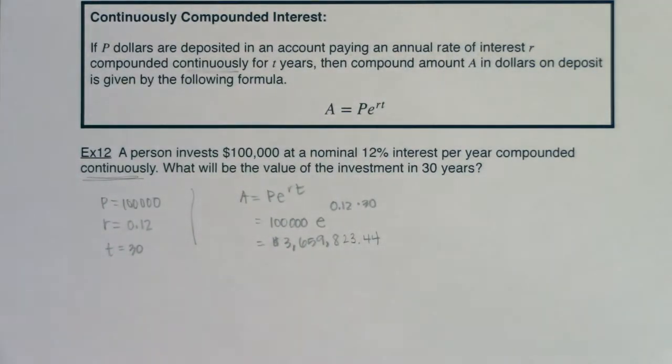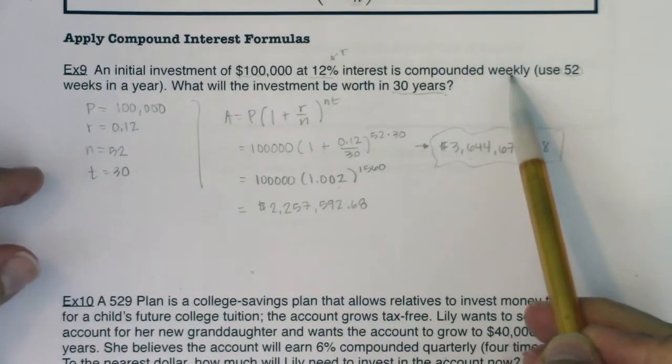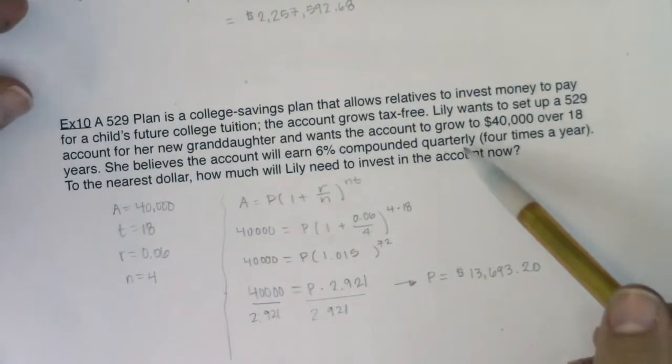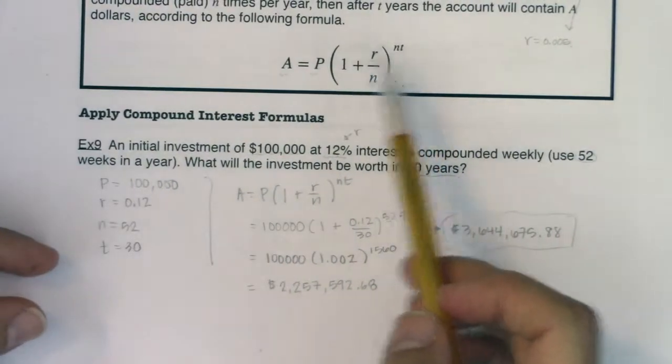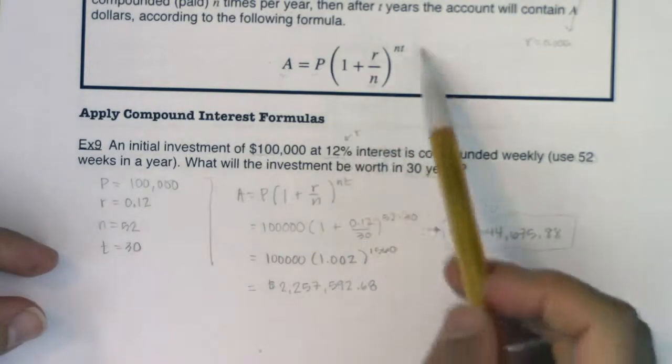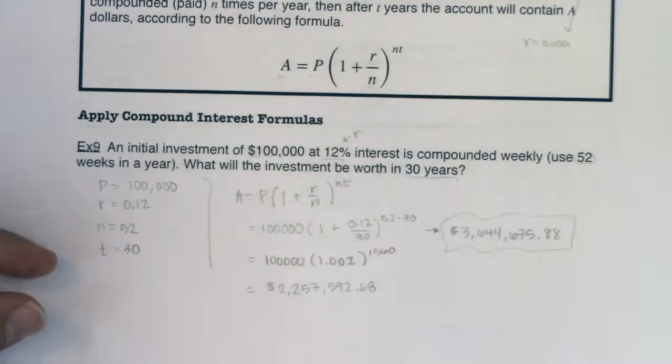If you see any other compounding, and again, we did two examples of this. We had compounded weekly, and then we had compounded quarterly. When it's not continuously compounded, then you're going to use this equation, which will have a different base.